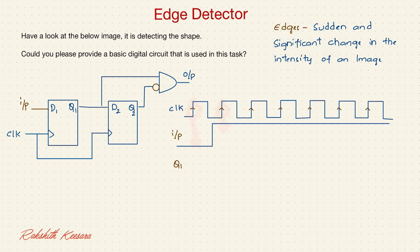At this edge it is 0. At this edge it is 1. So Q1 will be this thing, right? Whenever there is an edge it detects a 1.